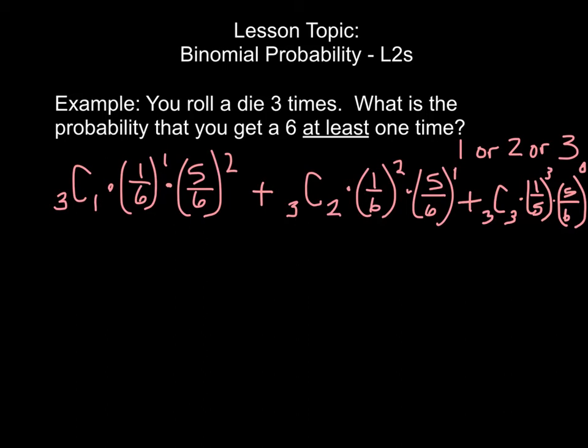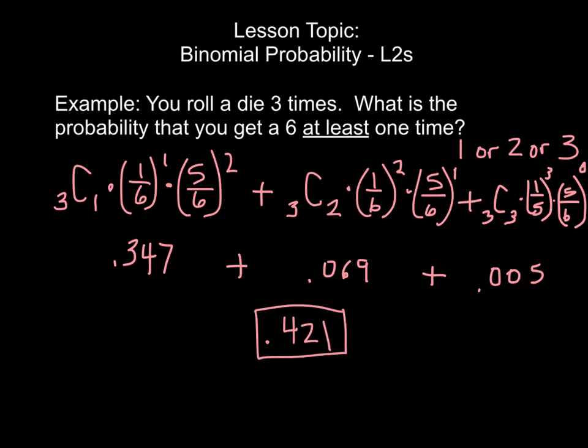Now we just compute each of these. The first one, 3C1 times one-sixth to the first power times five-sixths to the second power, that will be 0.347. Plus 0.069, plus 0.005. And now we'll just add those three probabilities, and we get our probability of 0.421, or approximately 42% of the time. That if I roll a die three times, I will get a 6 at least one of those three times.